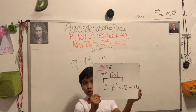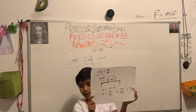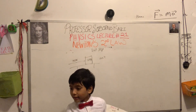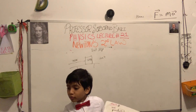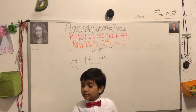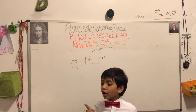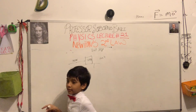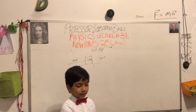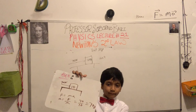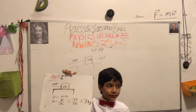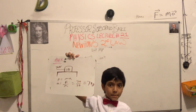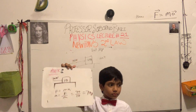I changed my answer. And you're correct. He got the correct answer. It is seven — not 0.7. Is that seven meters per second squared? Yes. Seven meters per second squared.